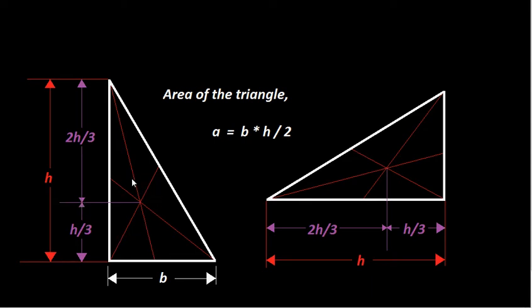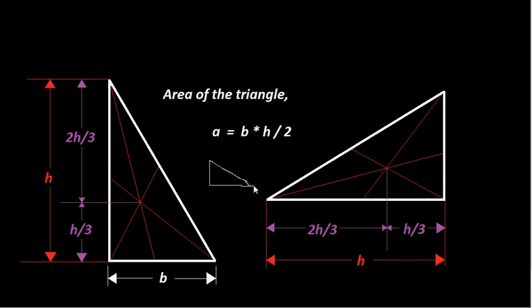Always remember this figure because your force system may be in a different shape — the base may be on a different side or the triangle may be oriented differently. Don't get confused. Your center of gravity will always be H/3 from the base and 2H/3 from the apex, regardless of orientation.